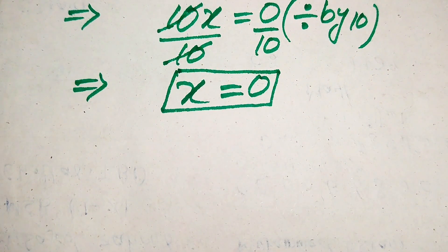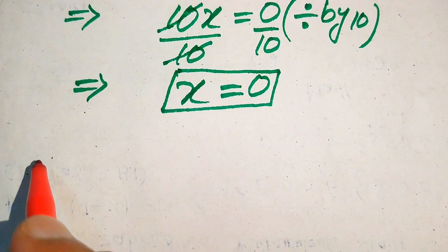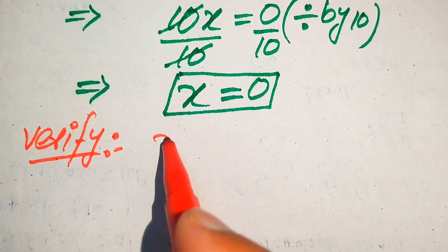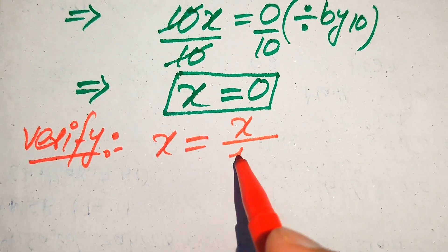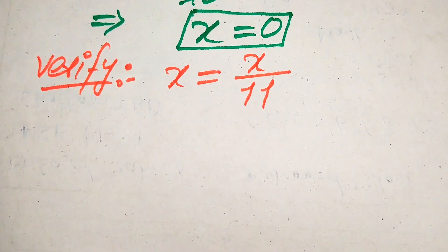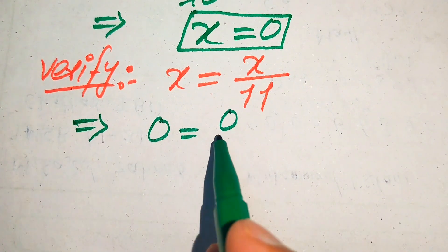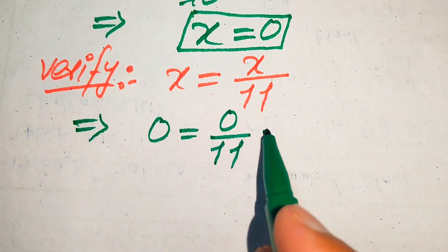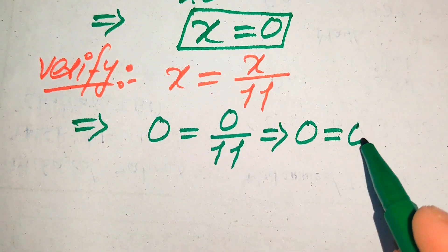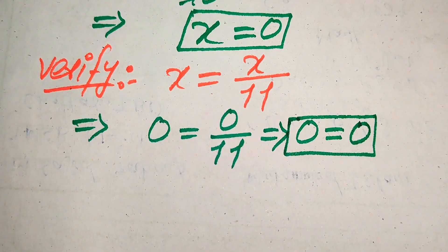We get just one root and now we need to verify whether this root is a solution or an extraneous root. For verification, we copy down the given equation: x equals x divided by 11. We put the value x equals 0 on both sides. It becomes 0 equals 0 divided by 11, which gives us 0 equals 0.